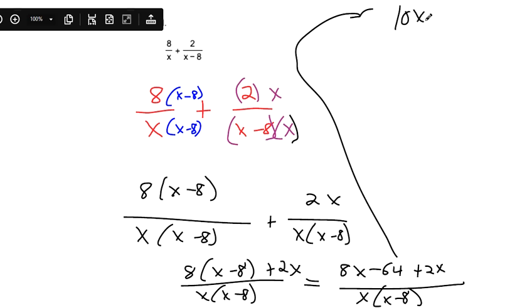We've got 10x minus 64 in the top, and it's still x times (x minus 8) in the bottom.